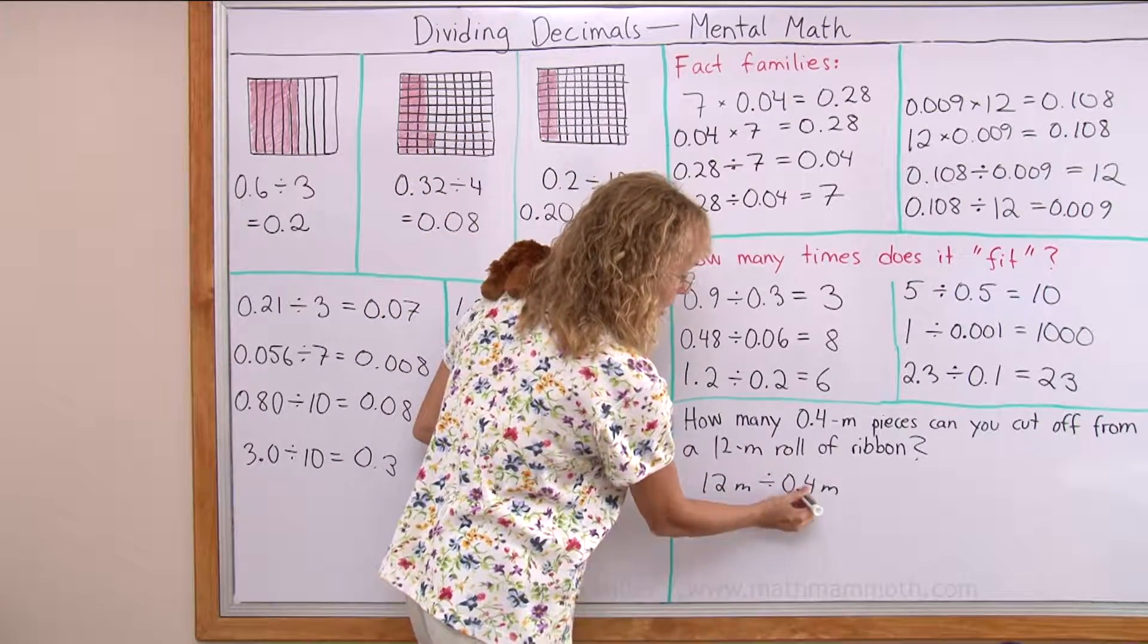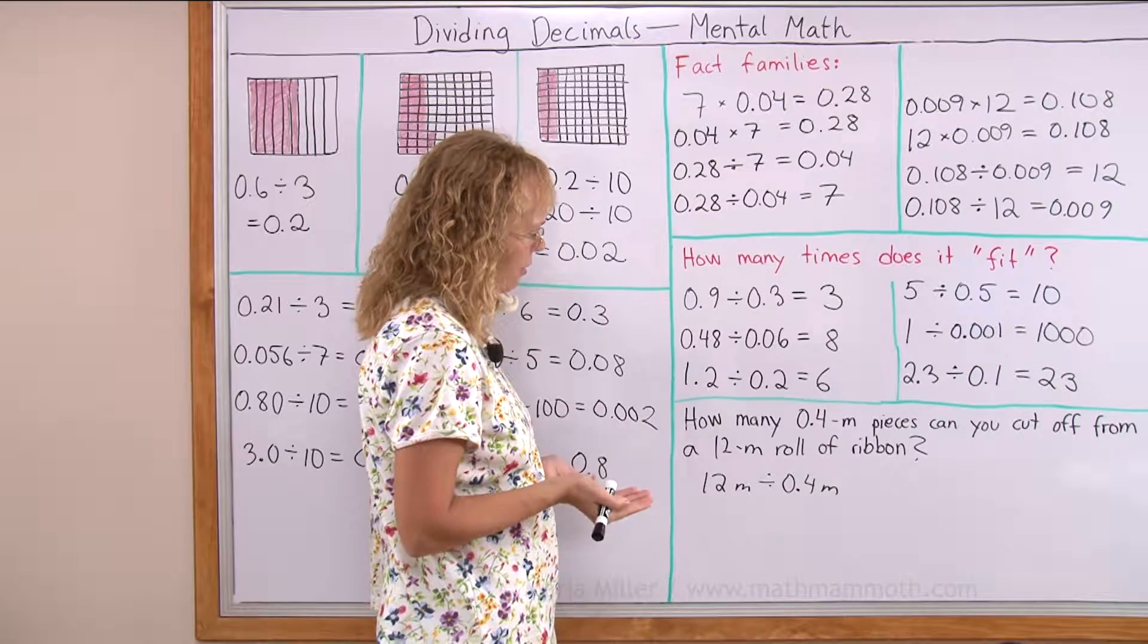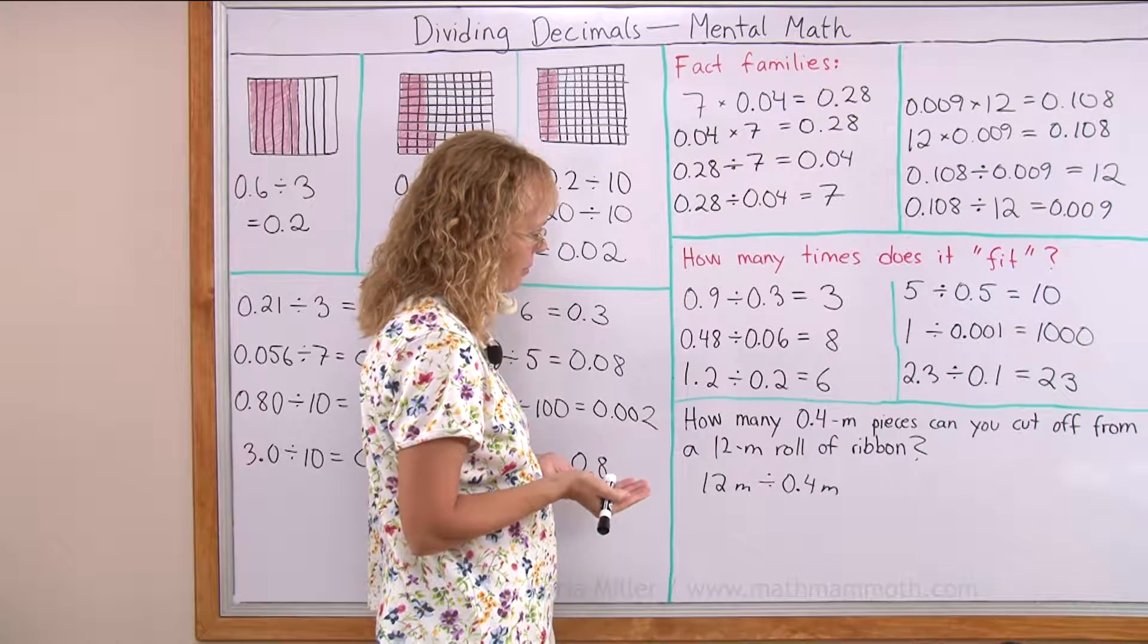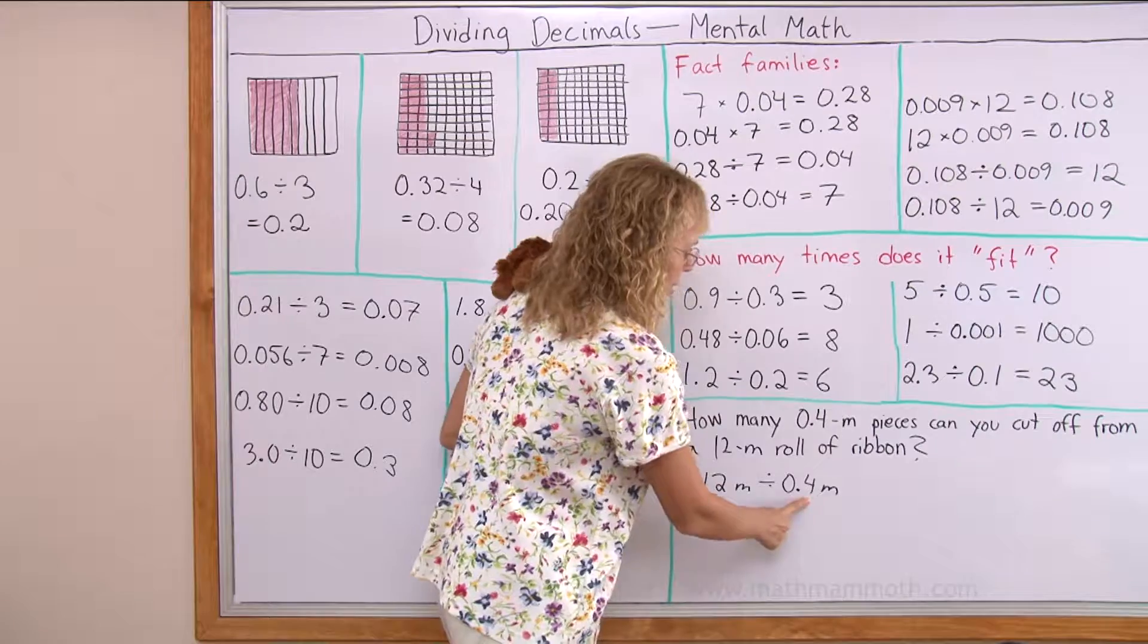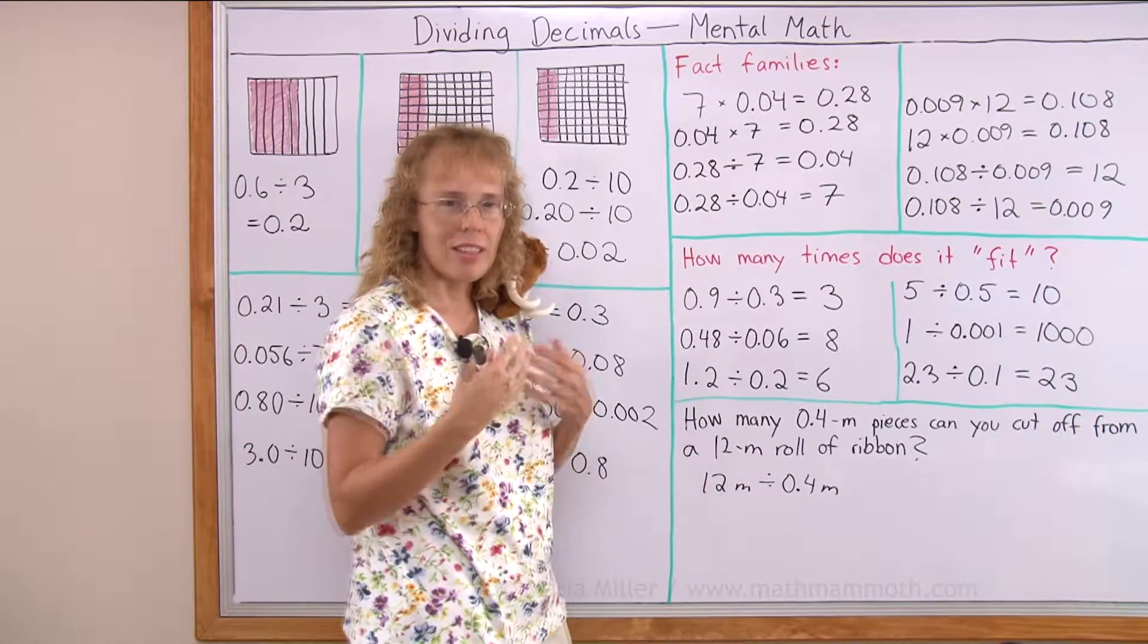And to solve it, here is 4 tenths. I would need to have tenths here too, so I can think in tenths. 4 tenths, and then how many tenths would I have here in 12 meters?